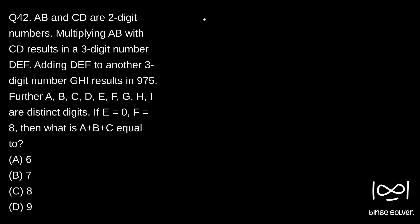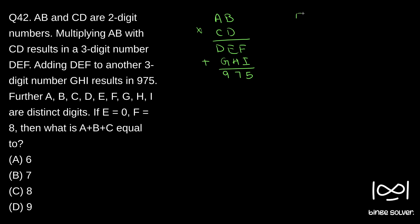I will just note down what is given. A, B into C, D results in a three-digit number D, E, F. And adding D, E, F with a three-digit number G, H, I gives 9, 7, 5. Here it is multiplication and here it is addition. It is also given E equal to 0 and F equal to 8. It is also given A, B, C, D, E, F, G, H, I are distinct digits.